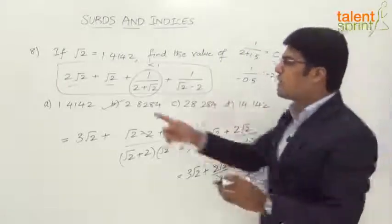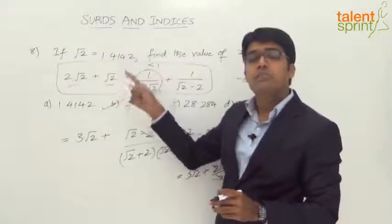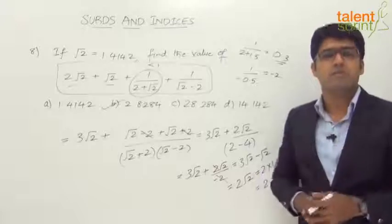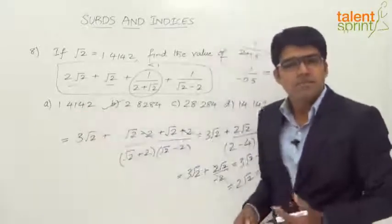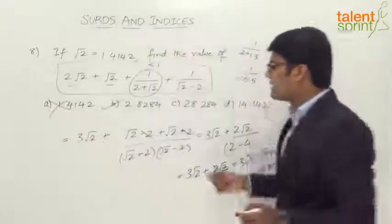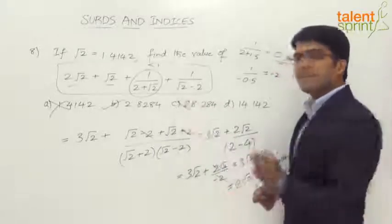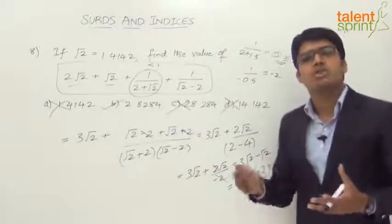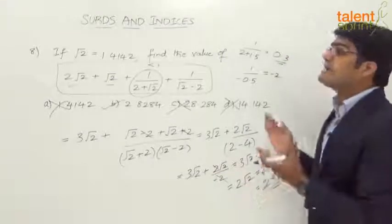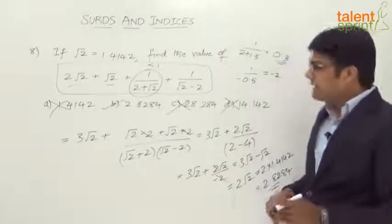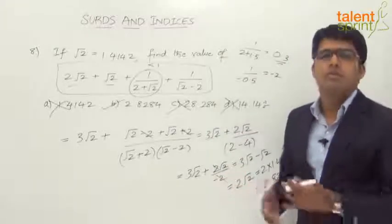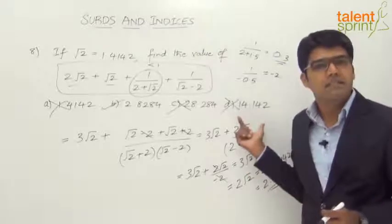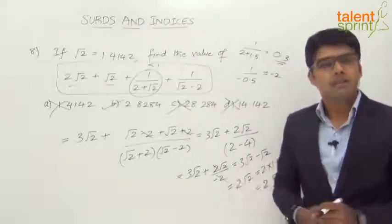The approximate result is around 2.8. Option A (1.4142) is far away — ruled out. Option C (28.284) — no chance — eliminated. Option D (14.142) — eliminated. So without any rationalization, using only approximation, we arrive at option B. However, this works here because the options are far apart. If there were a 'none of these' option, approximation would be riskier.